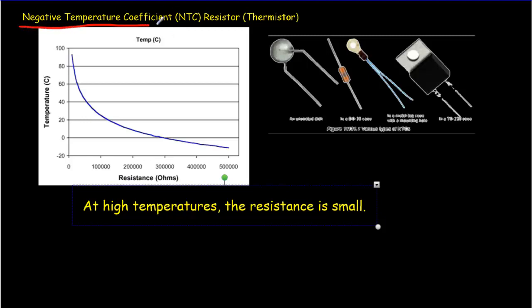There are temperature sensors. One's called a negative temperature coefficient, an NTC resistor, also called a thermistor. And the way it works, if you're at a high temperature, you get a small resistance. So if we're up here at a high temperature, resistance is tiny.